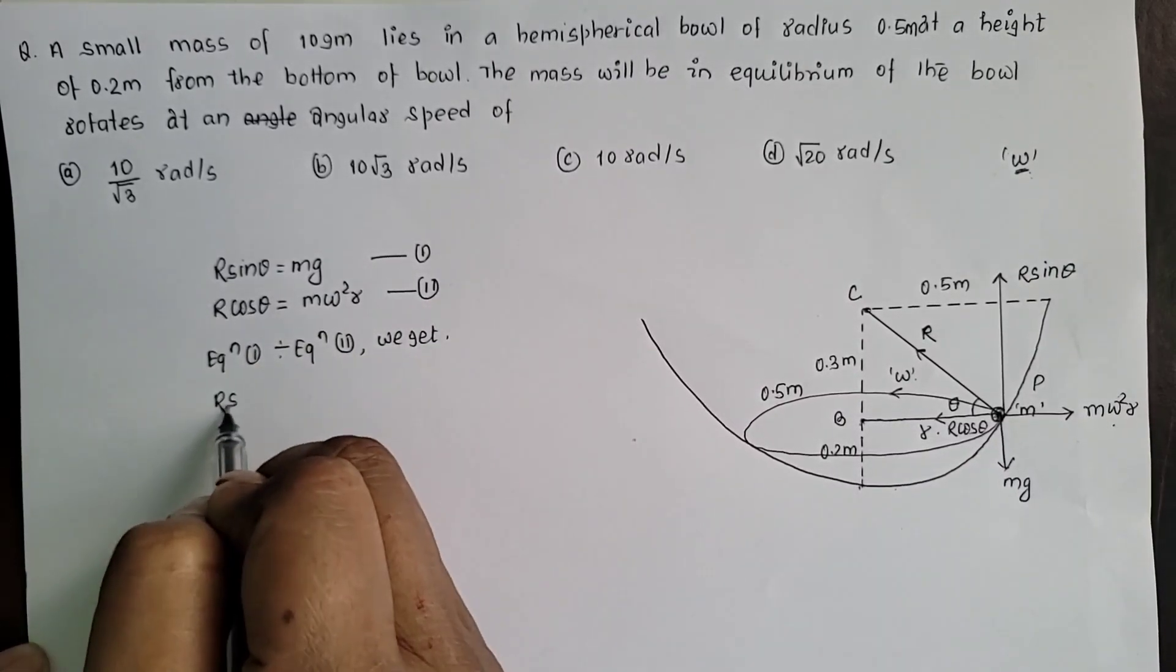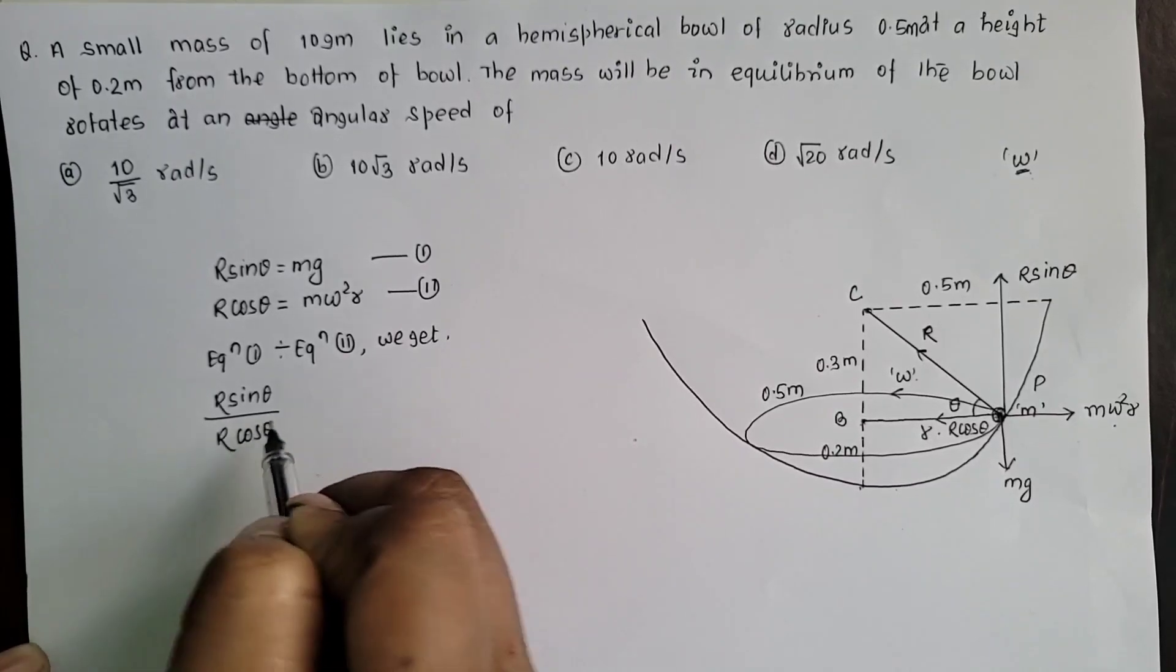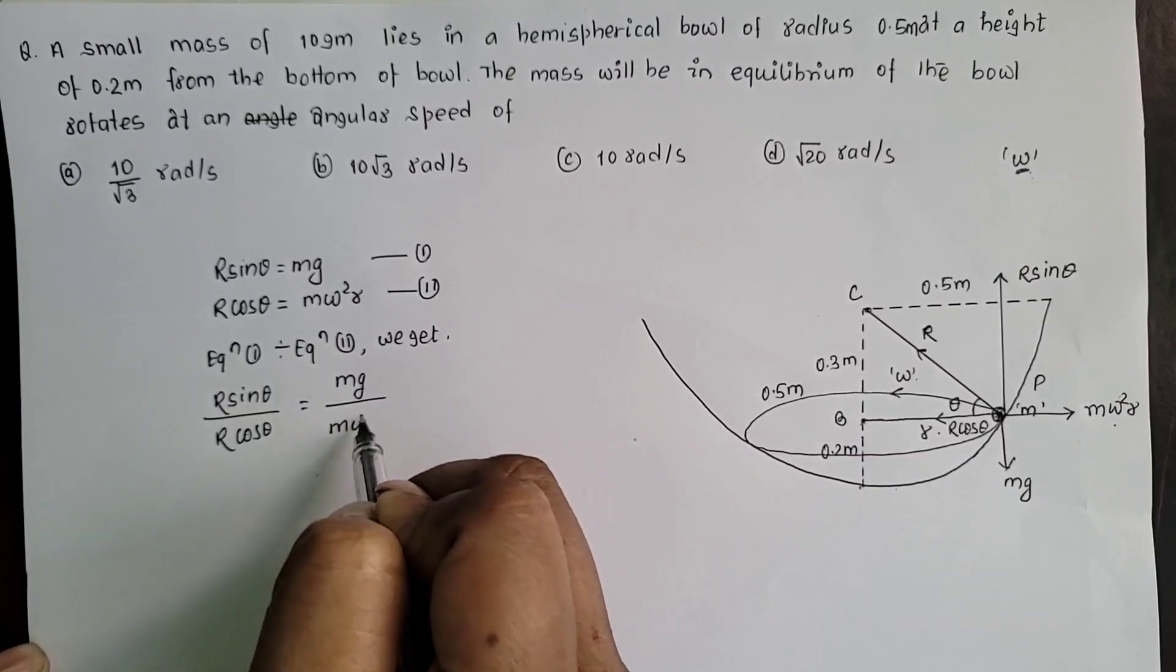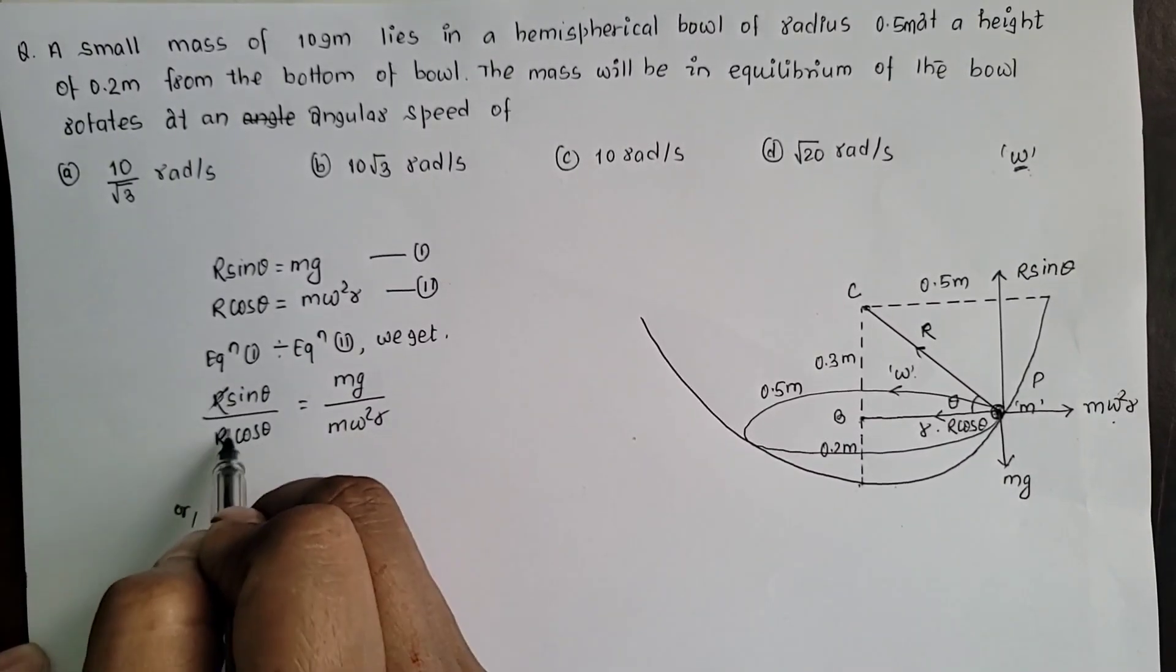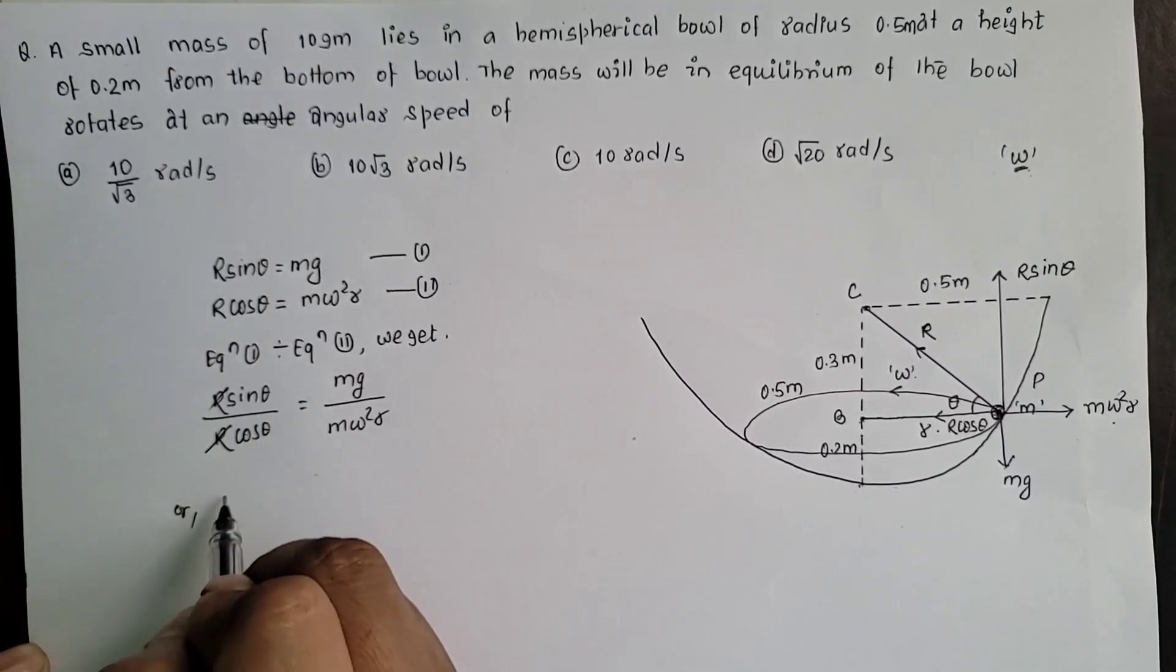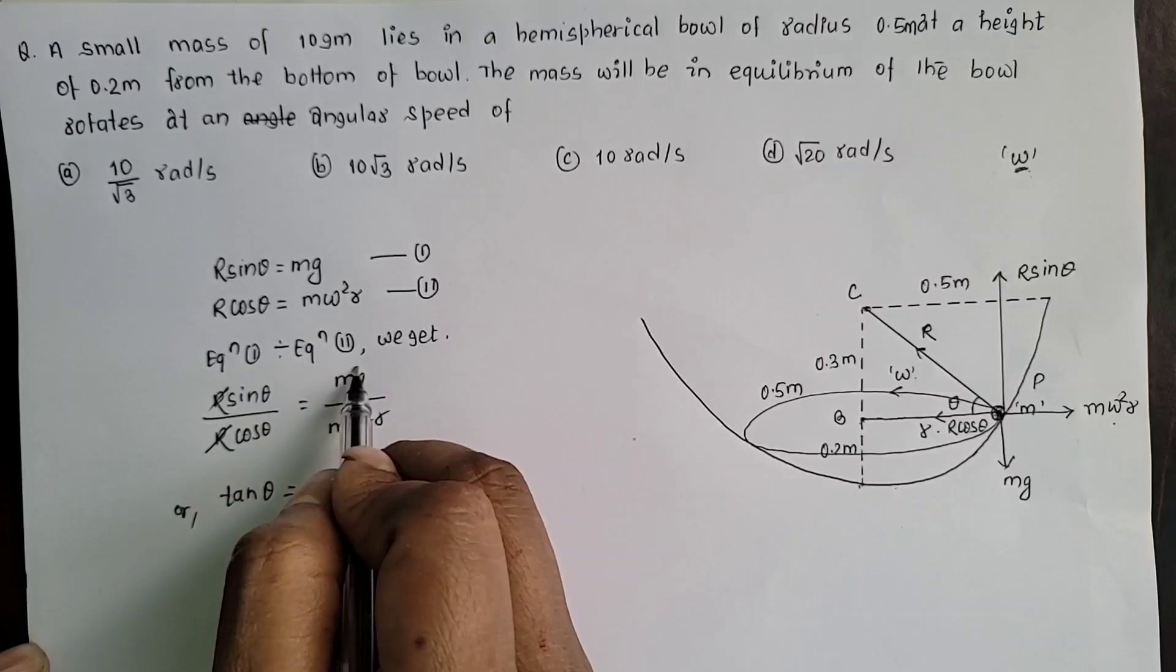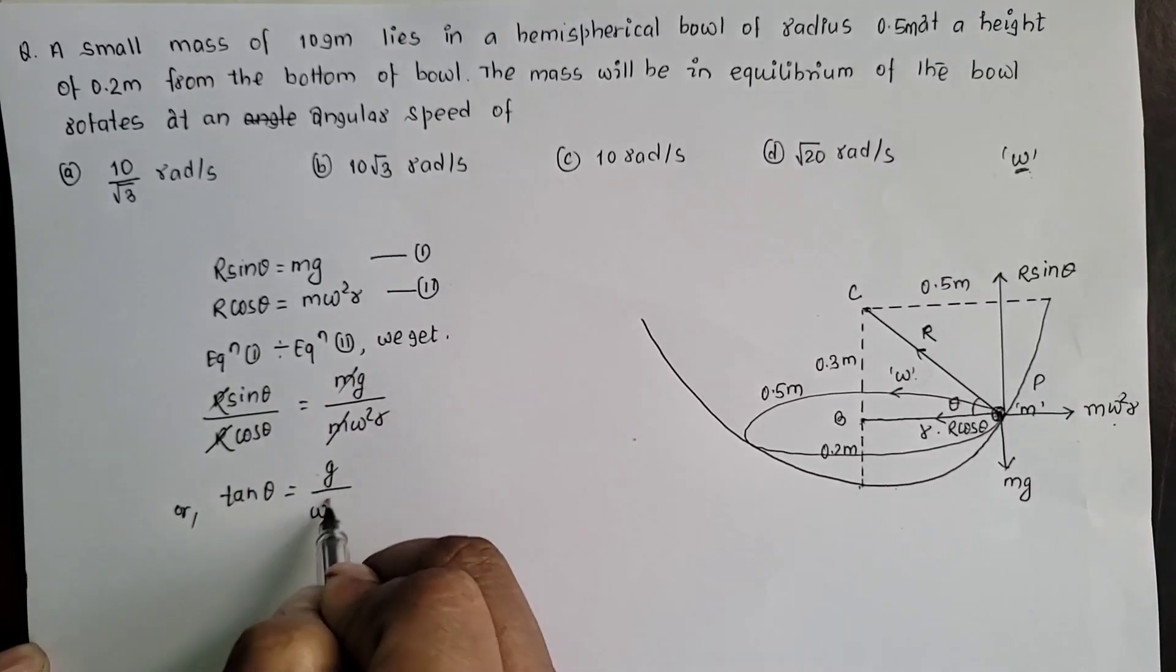R sin theta by R cos theta equal to mg by m omega square r. Lhe equation normal reaction R in R cancel vahyo. Sin by cos theta which is equal to, lhe equation object ko mass m or m cancel unhe, g by omega square r.